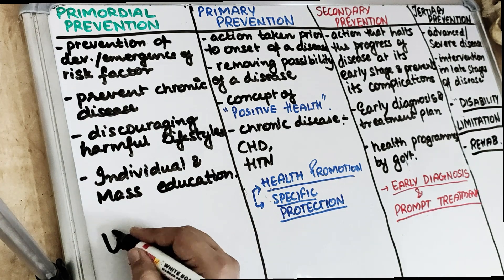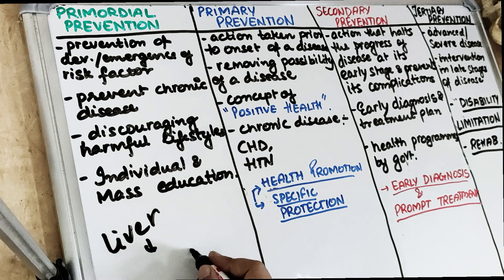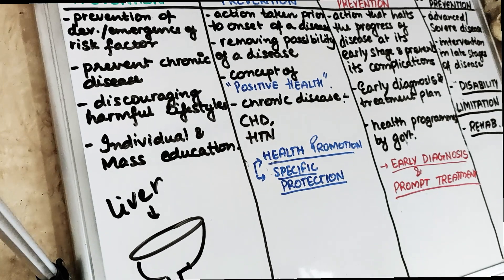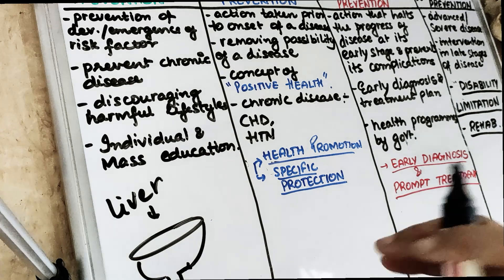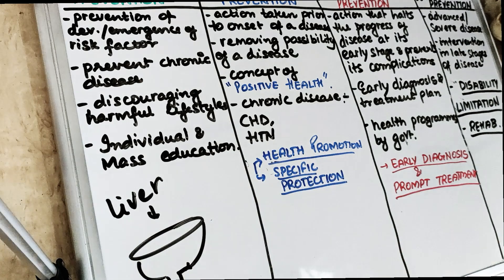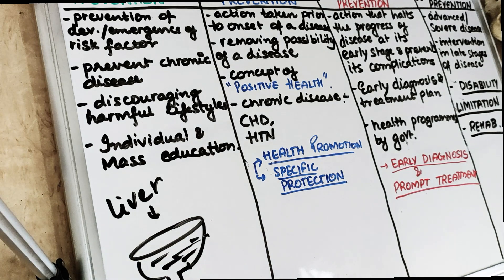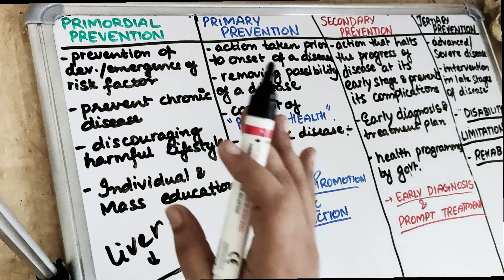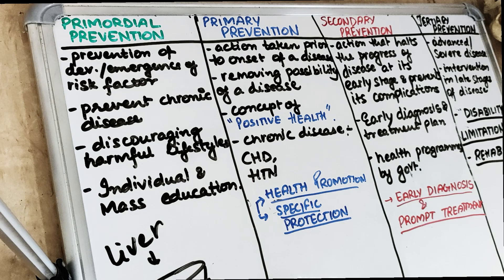Suppose liver cirrhosis is due to alcohol consumption. The primordial level of prevention is when your parents are suggesting you to join a college which is closer to your house so that you don't develop the habit of drinking. This is when you are preventing the risk factor — that is the primordial level of prevention.